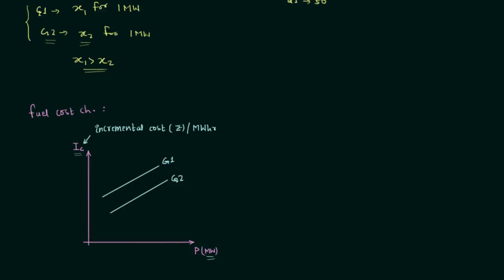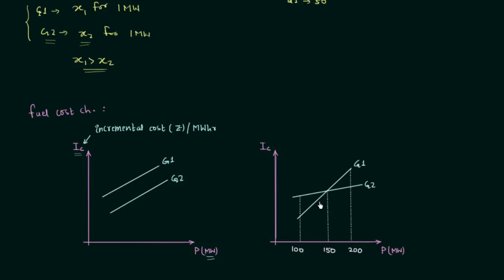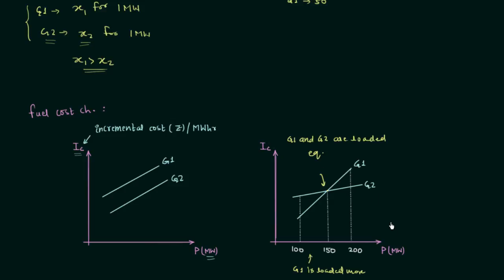Looking at the fuel cost characteristics of G1 and G2 more closely: from 100 to 150 megawatt, the incremental cost of G1 is lower than G2, so G1 is loaded more in this range. At 150 megawatt, the incremental cost of G1 and G2 is the same, so both are loaded equally. From 150 to 200 megawatt, the incremental cost of G2 is smaller than G1, so G2 is loaded more.